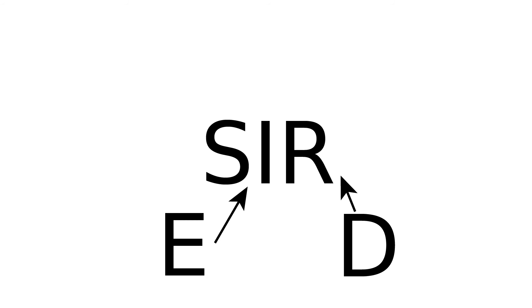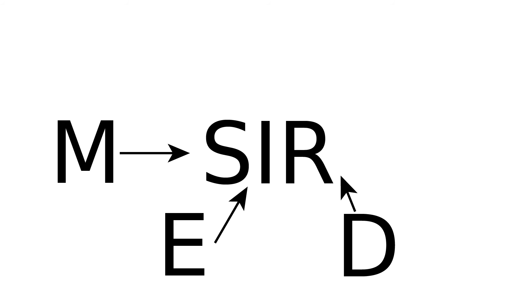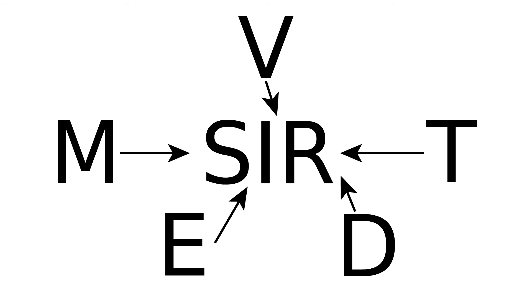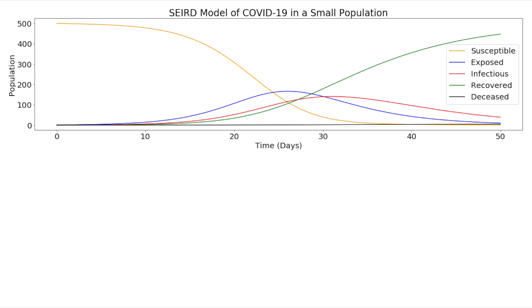The SIR model can be modified with any combination of additional compartments. Beyond the E or exposed compartment and the D or deceased compartment discussed in this video, there are even more compartments that can be added, including M for infants who acquire immunity from their mothers, V for those who gain immunity from a vaccination, and T for those who are treated while infectious. Many scientists prefer to use the SEIRD model to model the novel coronavirus, since it is believed to have a significant latent period and we are interested in how many deaths it may cause.